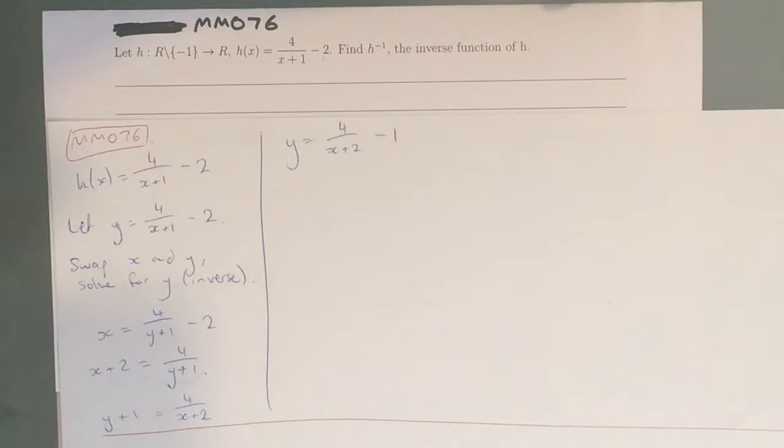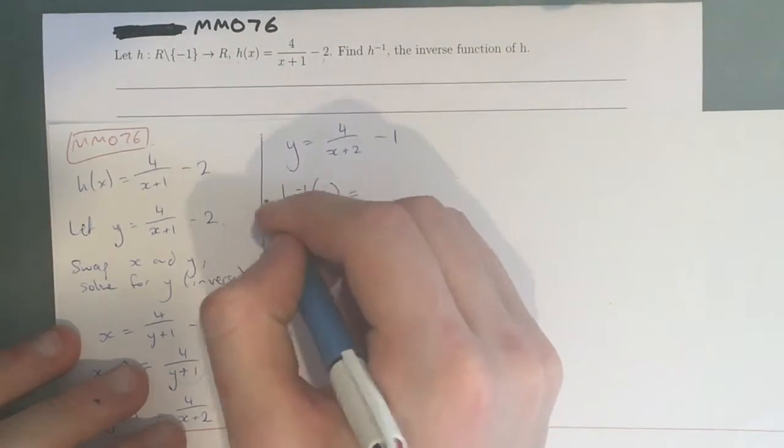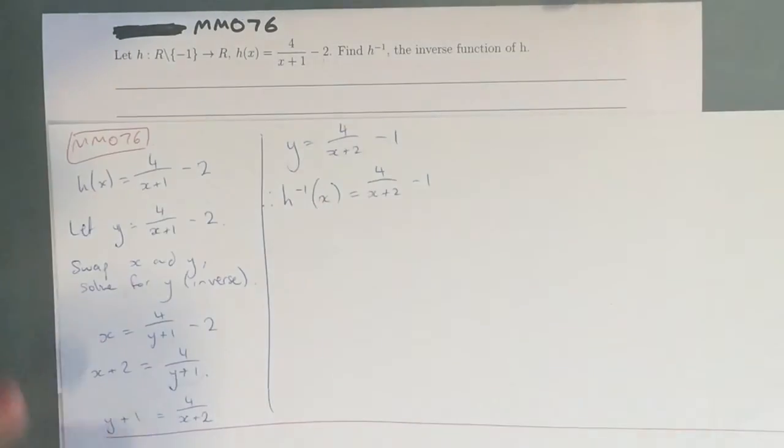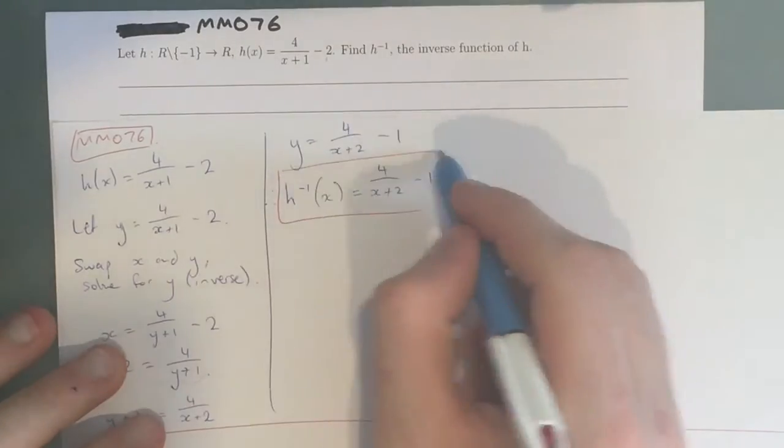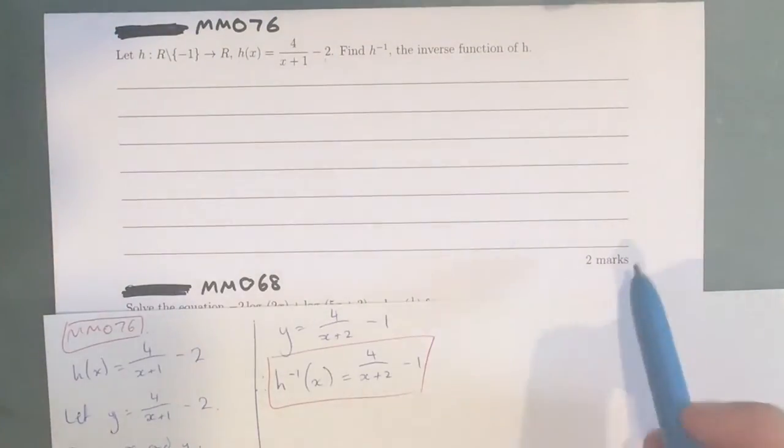However, this is not the end of the question. We need to write the inverse of h is equal, or therefore, the inverse of h is equal to 4 over x plus 2 minus 1. This is our final answer. It does not ask us for the domain, so we don't need to write the domain. And it's worth 2 marks.